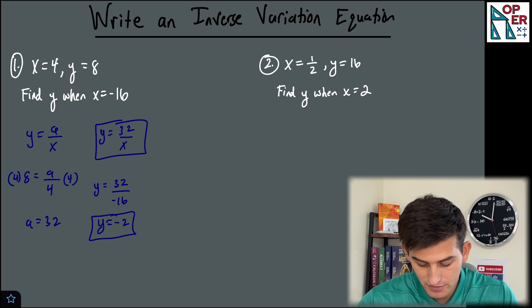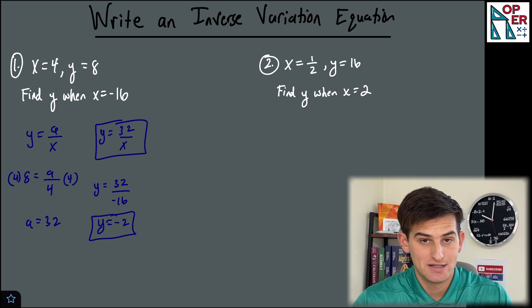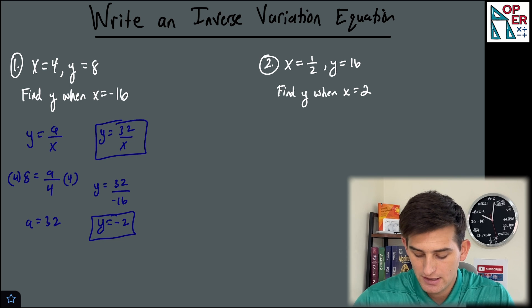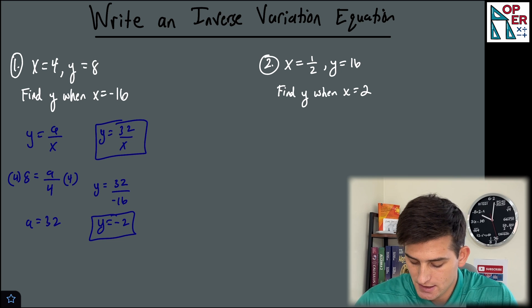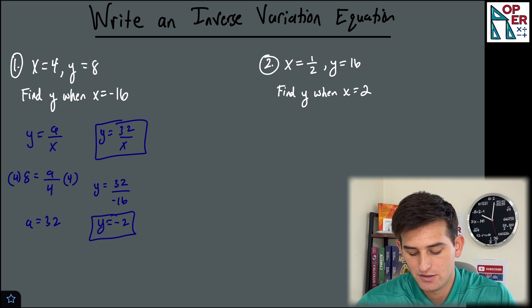Okay, so that's one way to do it. We start with our inverse variation, y is equal to a over x. For number two, x is equal to one half, y is equal to 16. We wanna find y when x is equal to two.